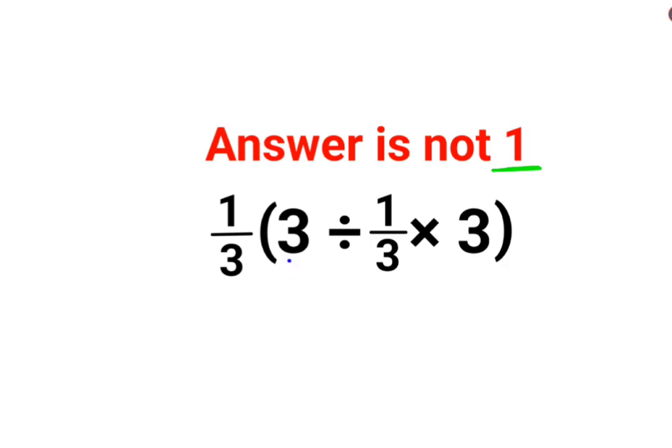Please understand we have 3 divided by 1/3 multiplied by 3, and everything is in the bracket first. Here we have a bracket and then everything gets divided by 1/3 again. So now in this case what should we do?